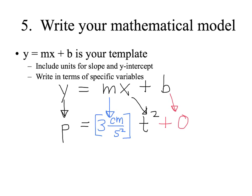You do not have to have the plus 0 for this particular example, because you don't need to write 0. But we have included units for slope and Y intercept, and we have written our equation in terms of the specific variables in our problem, which are position and time. So you have successfully straightened a nonlinear graph and written a mathematical model that describes that graph.